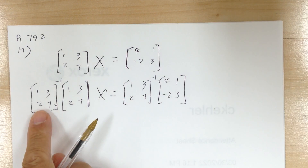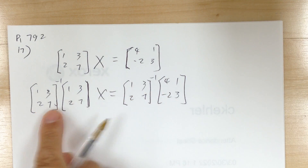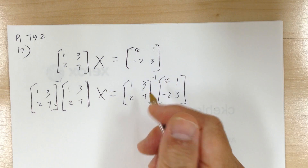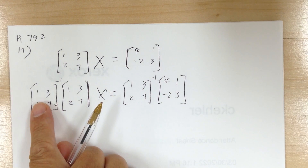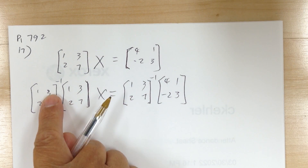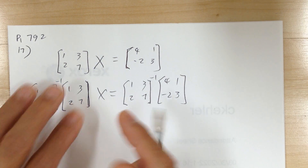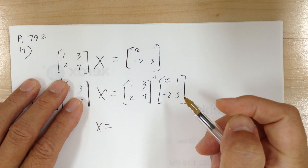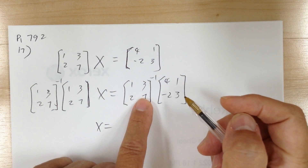So multiply by the matrix inverse on both sides, and you have to put it in the front. The inverse and the matrix times its inverse will cancel out, so X will equal the right-hand side result. Now you have to figure out this part.